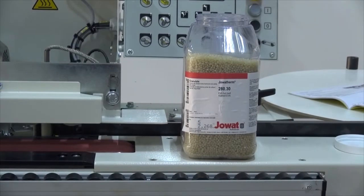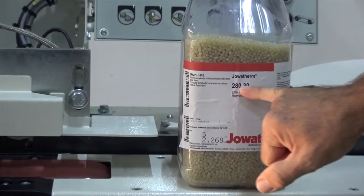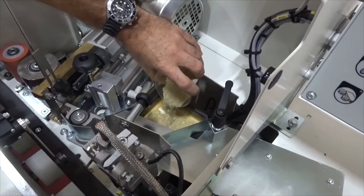This edge bander uses standard EVA glue. This is Jowat brand 280 series natural color. Other brands and colors are available.